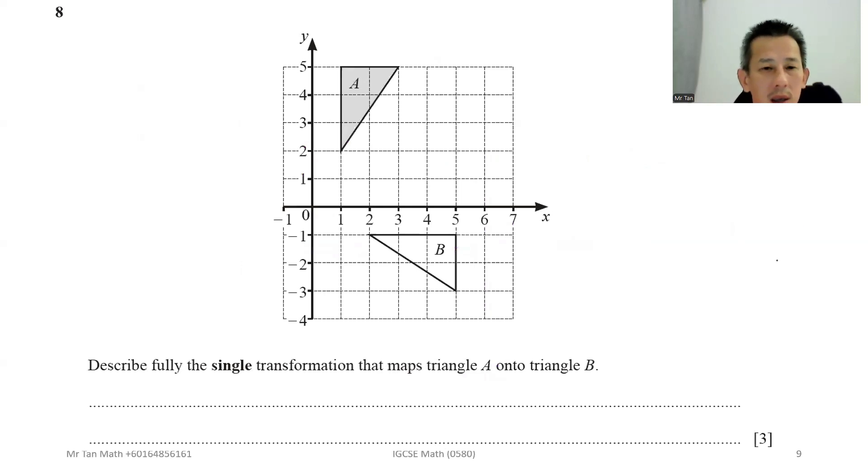Number eight. Describe fully the single transformation that maps A to B. Okay, to know the marks, when you want to describe three marks it's either rotation or enlargement. In this case, the same size, so it's rotation in this direction, 90 degrees clockwise. I'll just put here it's a rotation.